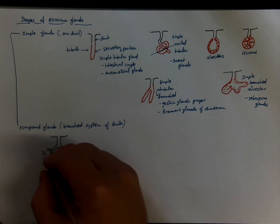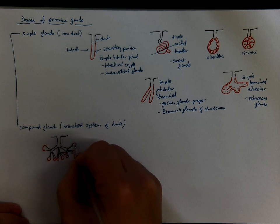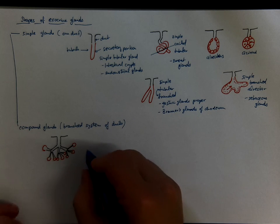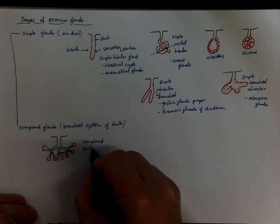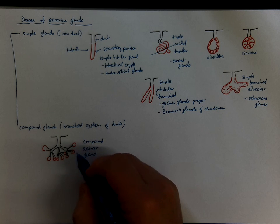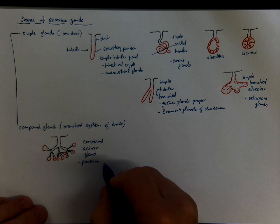And on the periphery there could be acini, for example. So we will call that a compound acinar gland. And that's a topologic scheme of the exocrine portion of pancreas, or the parotid gland.